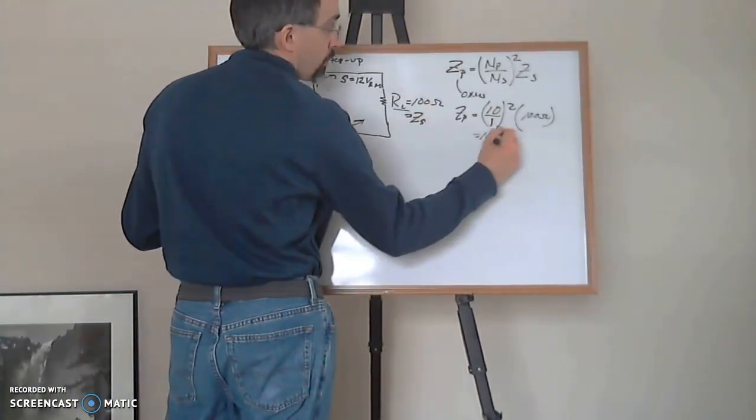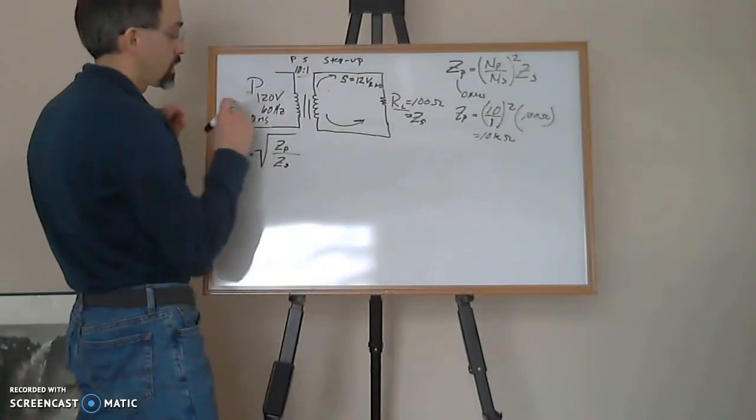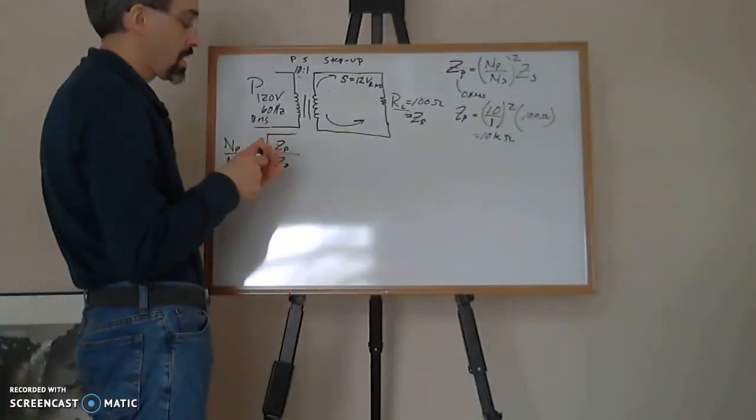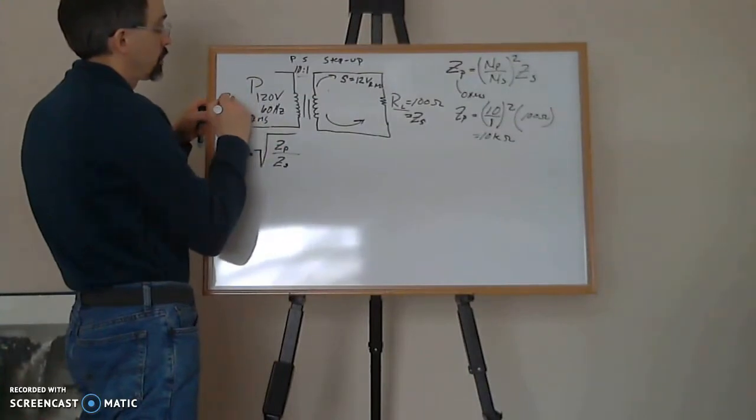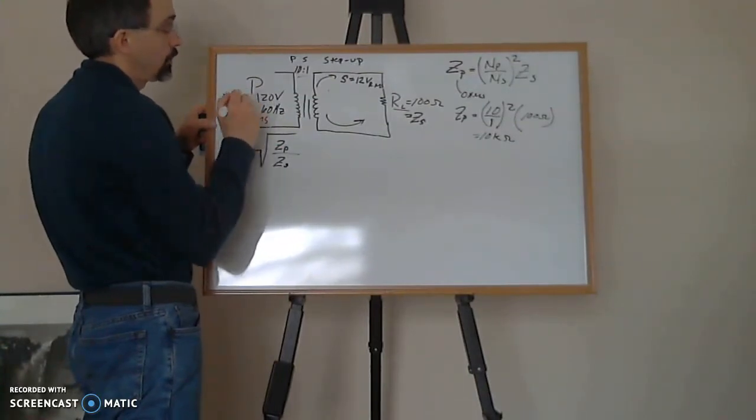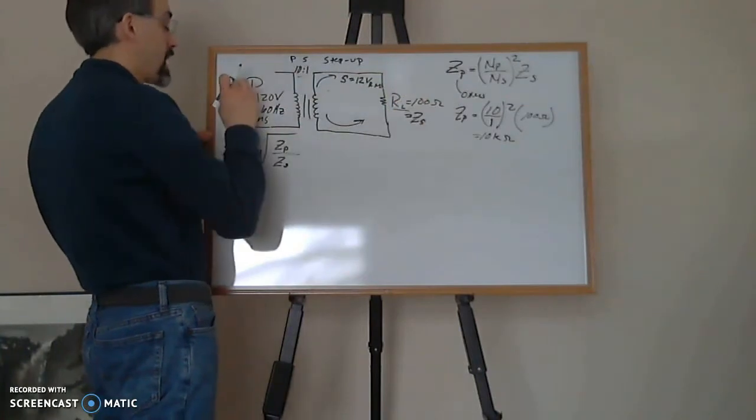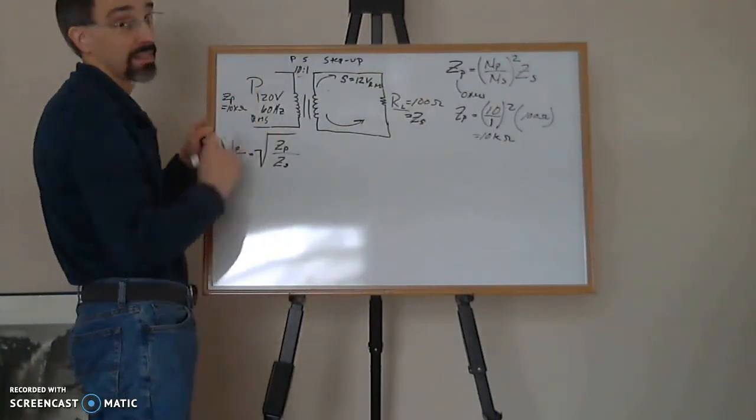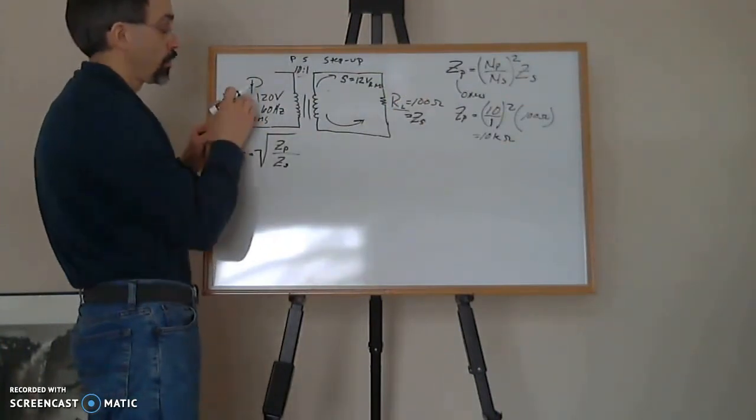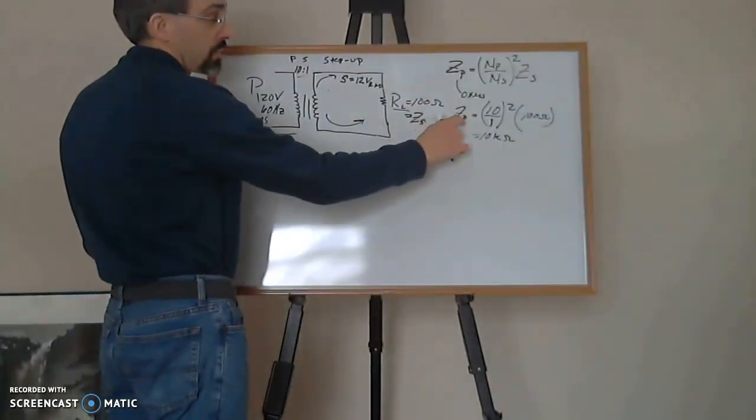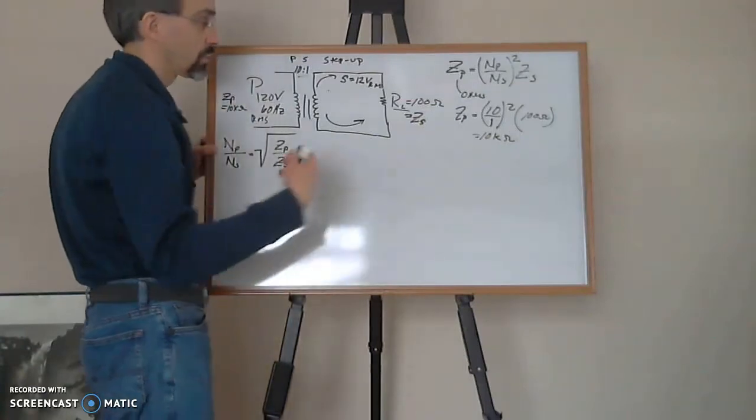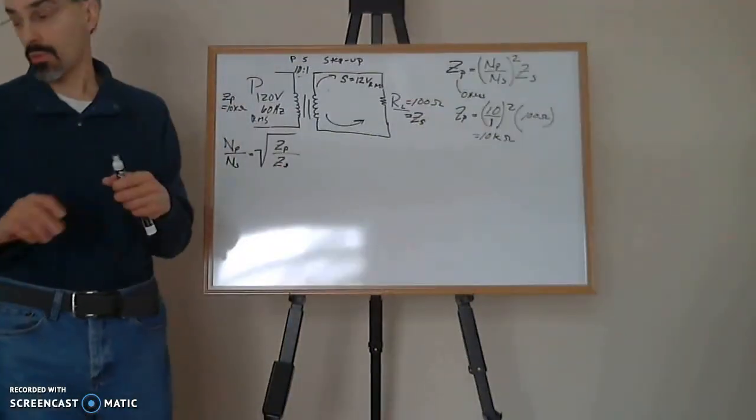10k ohms. So this Zp right here is equal to 10k ohms. Basically this 100 ohms reflected back over here, what this side sees is a 10k ohm resistor, a 10k ohm impedance. I'm going to show you that this is actually 10k. We're going to have to do some math on this.